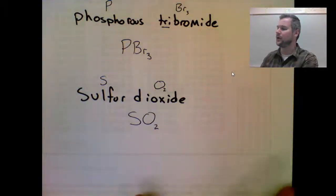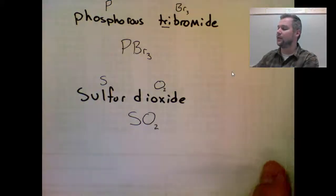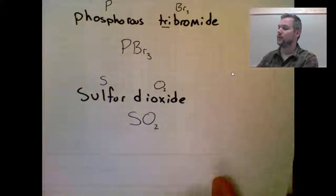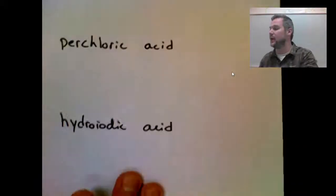So these are really pretty straightforward. The key with the covalent is just making sure that you do not crisscross your prefixes because you crisscross on acids and ionics.